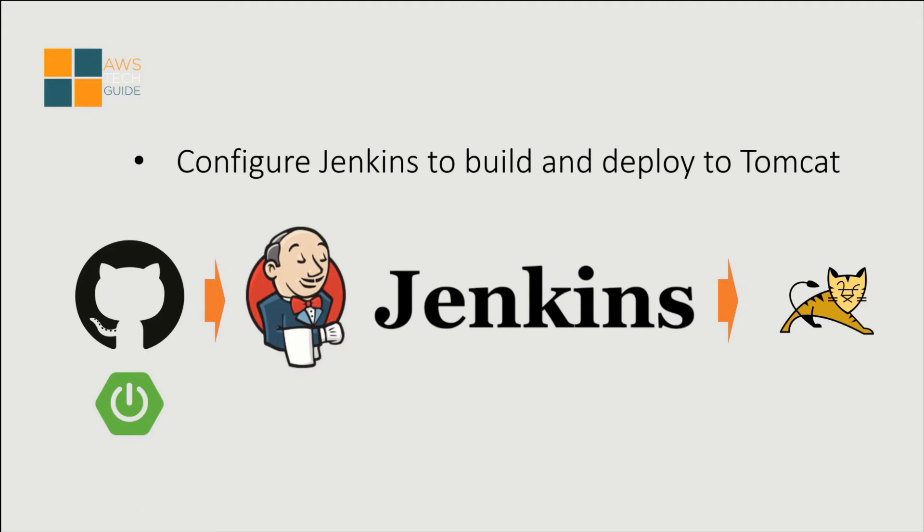Hello there, welcome to AWS Tech Guide session. Today I will show you how to configure Jenkins to build and deploy to Tomcat. In this tutorial I will be building one Spring Boot web application project which I have kept in a GitHub repository, and we will pull that project, build it through a Maven build in Jenkins, and after that from Jenkins we will push the deployable — which is the WAR file — to Tomcat and check whether the application is up and running.